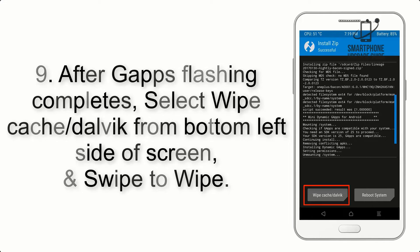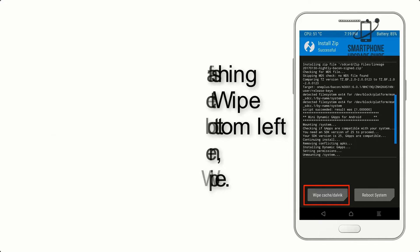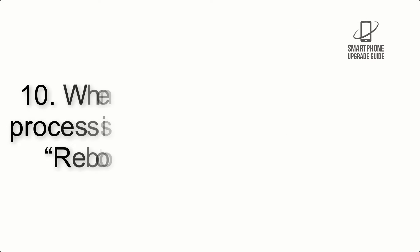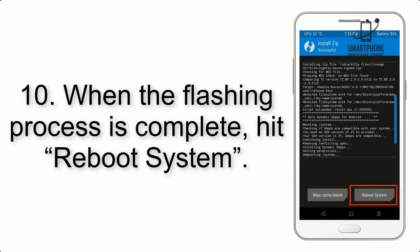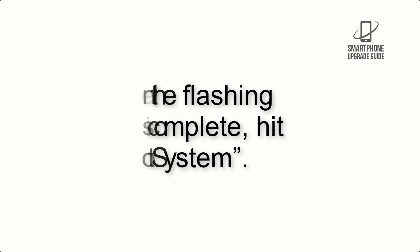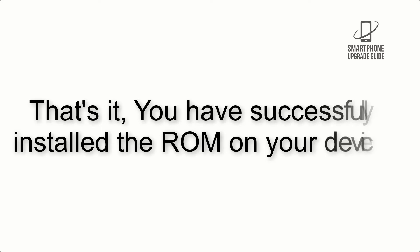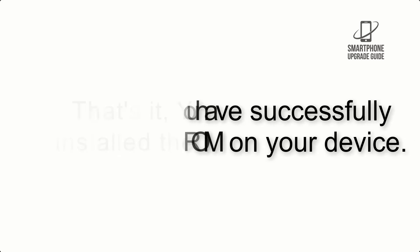Step 9: After GApps flashing completes, select wipe cache and dalvik from the bottom left side of the screen and swipe to wipe. Step 10: When the flashing process is complete, hit reboot system. That's it — you have successfully installed the ROM on your device.